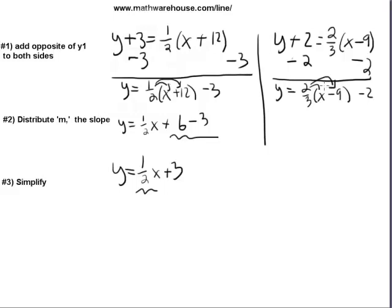And you end up with y equals 2 thirds x minus 9 minus 2. Then we're going to distribute the slope. To get y equals 2 thirds x minus 2 thirds times 9 will be 6. So it's going to be minus 6 minus 2. Step 3, simplify, and you end up with y equals 2 thirds x minus 8.